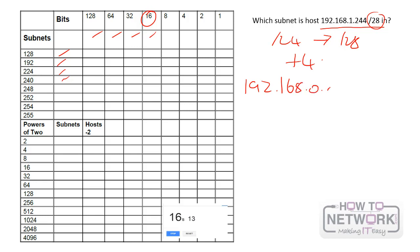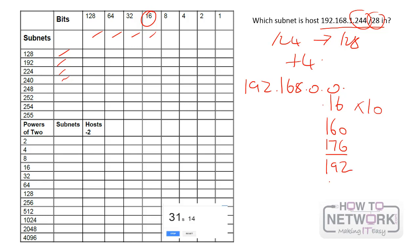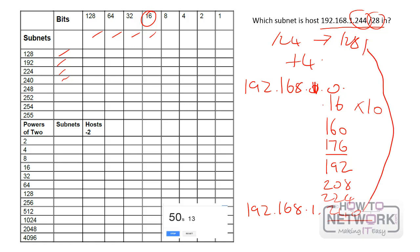192.168.0.0 — we're looking for 244. So we'll go 16, and then use our jump strategy to get to 160, then 176, 192, 208, 224. Then 192.168.1 — I should have put 1 here — 1.240. This is the last octet, the last subnet, and our host is in this one here.